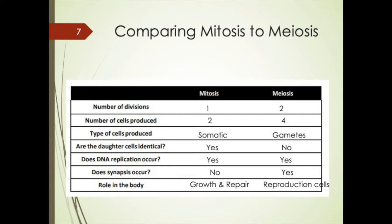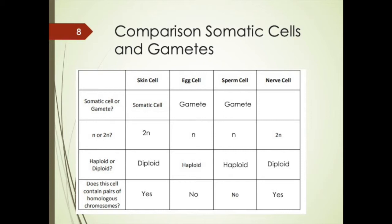Both mitosis and meiosis undergo DNA replication. Different types of somatic cells include skin cells, nerve cells, heart cells, nose cells — anything except the eggs and the sperm.